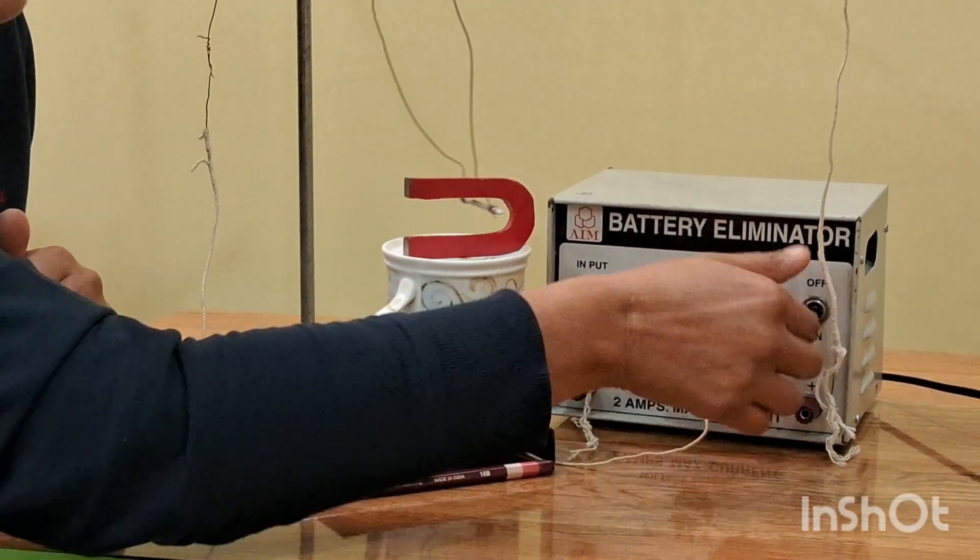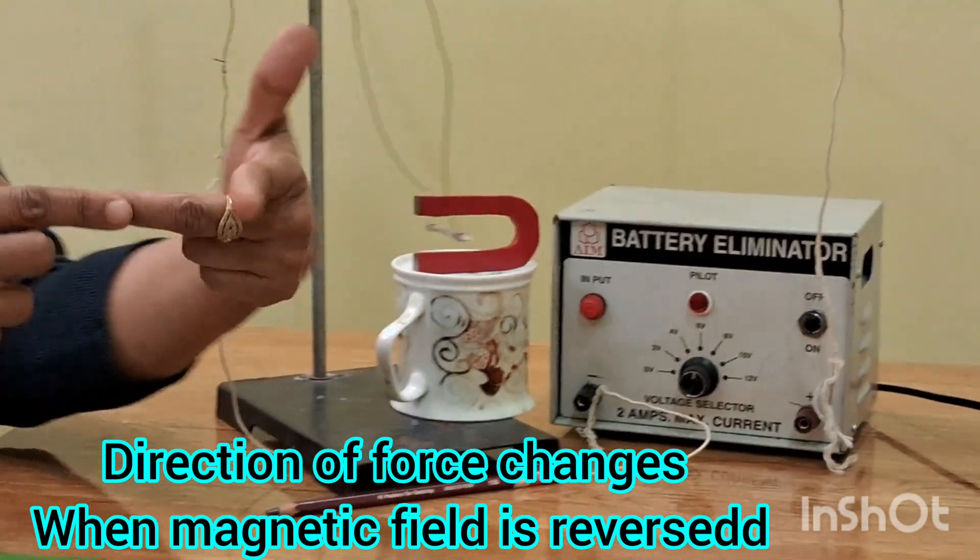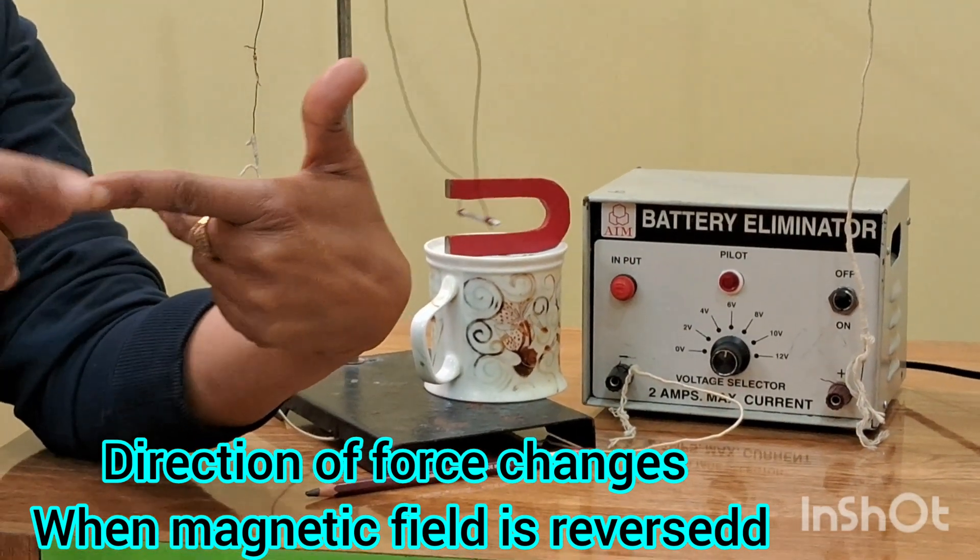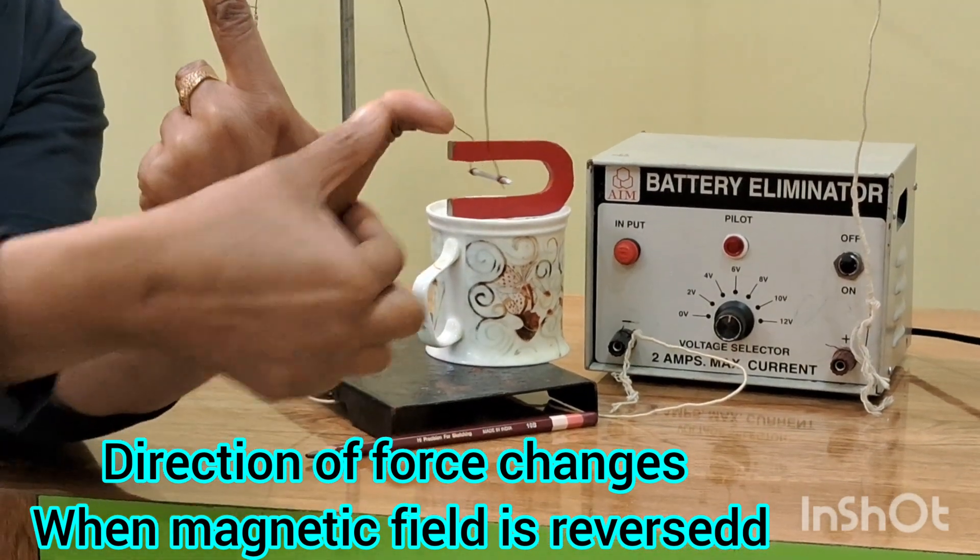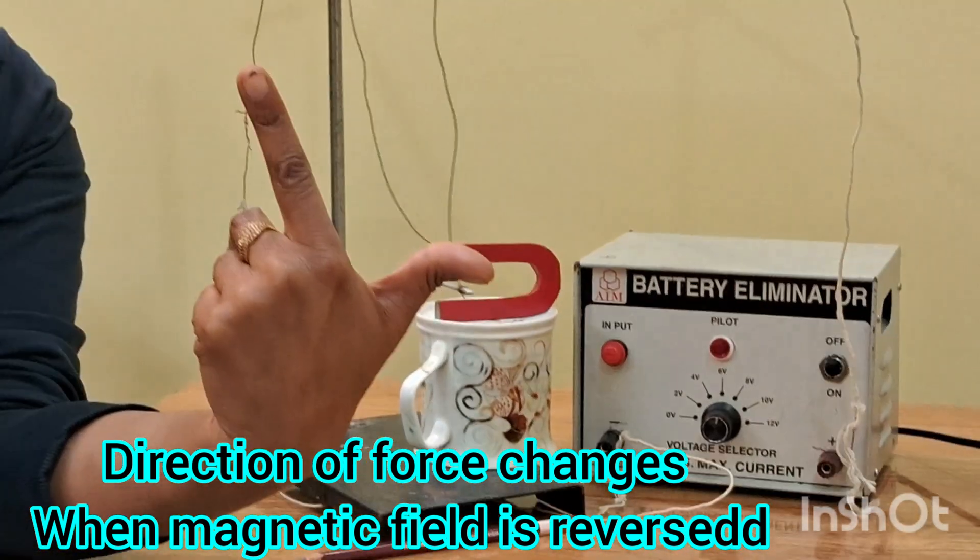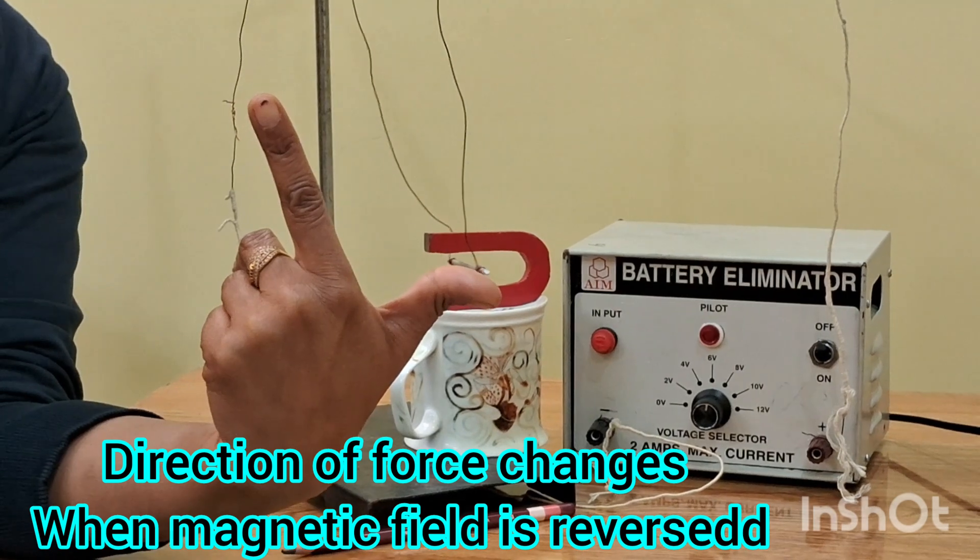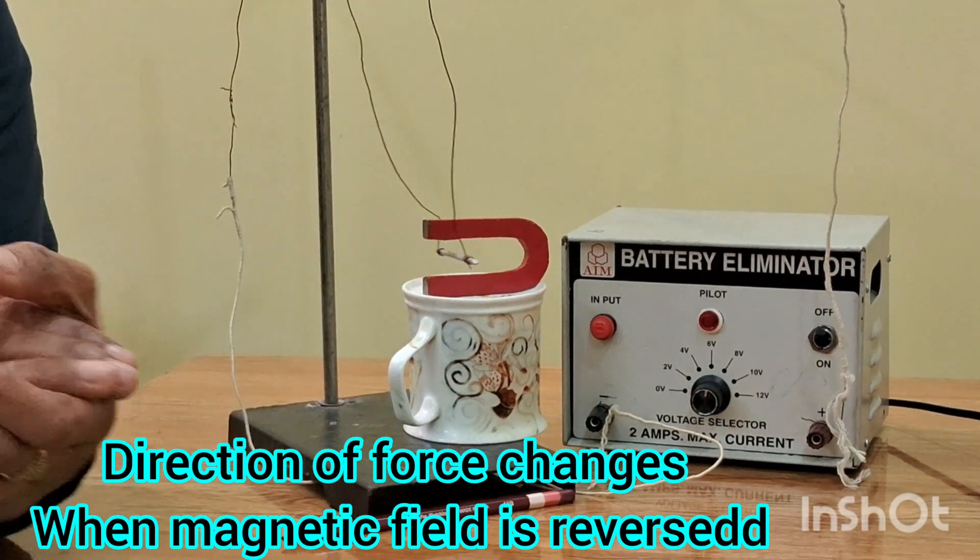The rod moved in. Because when we are saying that the current is in the same direction, but magnetic field is changed. Now the magnetic field is upwards and the thumb is pointing that side. So when we change the direction of magnetic field, the force also changes its direction.